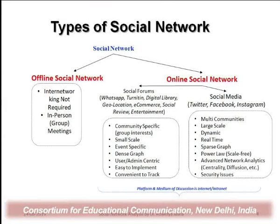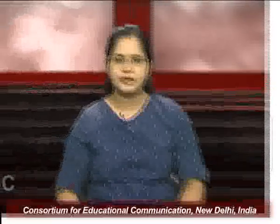Now the types of social network. We often call the Twitter network or Facebook network all as the same thing, but in reality, social network is a physical world concept — it has an offline aspect as well. Offline, like in-person group meetings, can also be called a social network since people are social and forming networks to discuss certain issues. But when group interaction involves inter-networking structures, it becomes an online social network, requiring internet connection for communication and content sharing.